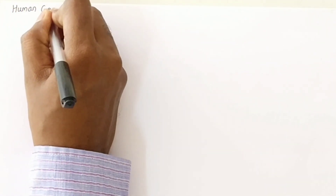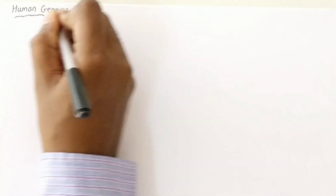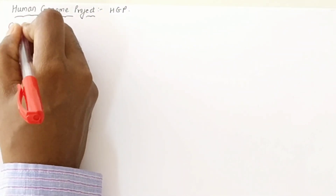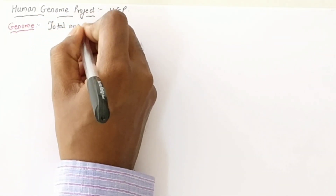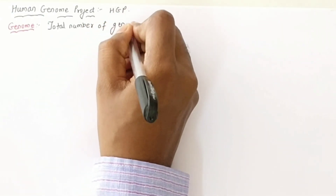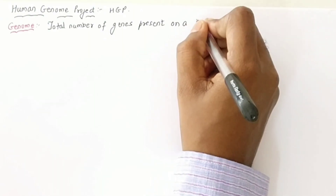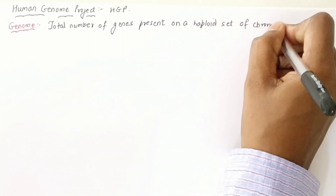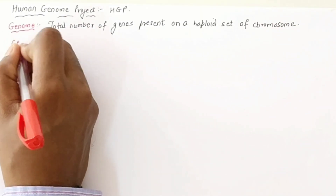Today we are going to learn a very important topic — the Human Genome Project, or HGP. First of all, what is the meaning of genome? Logically, the genome is the total number of genes present in the haploid set of chromosomes. For humans with 46 chromosomes, the genome refers to the total genes in 23 chromosomes.